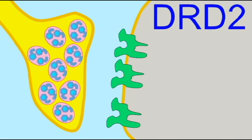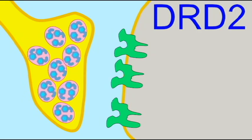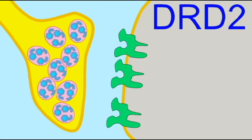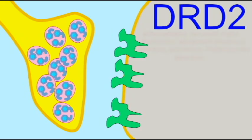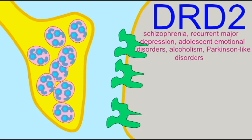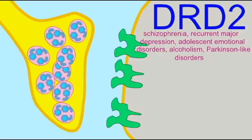Variations in the dopamine receptor D2, or DRD2, apparently have very significant effects on personality. DRD2 alleles have been linked to schizophrenia, major recurrent depression, adolescent emotional disorders, alcoholism, Parkinson-like disorders, delusional behavior, and other abnormal aspects of personality.